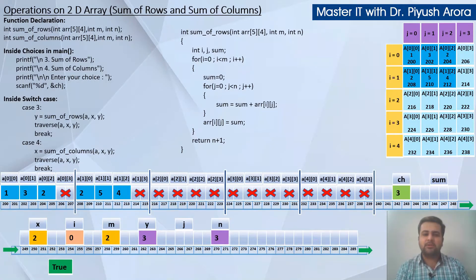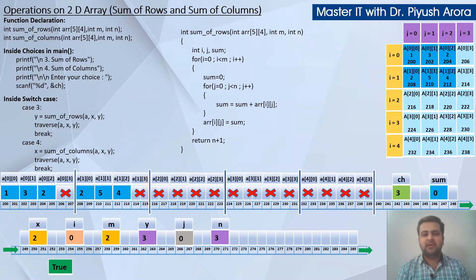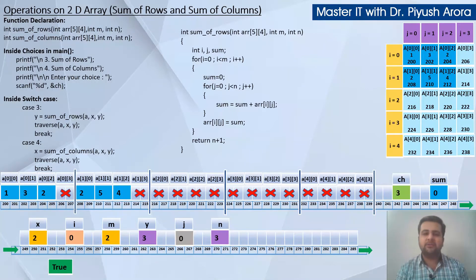The function starts. Inside the outer loop, sum is initialized to zero — we initially assume our sum is zero. Then the internal loop runs: for j=0 and j less than N (N is number of columns). The condition 0 is less than 3 is true, so we enter the internal loop. The key statement is: sum = sum + arr[i][j]. With i=0 and j=0, arr[0][0] is the first element, so sum becomes 0 plus 1, which equals 1.